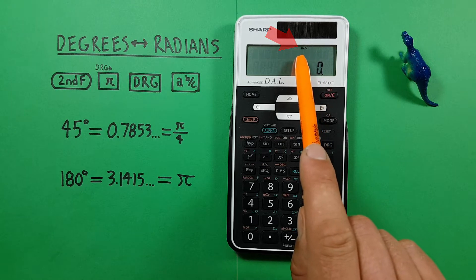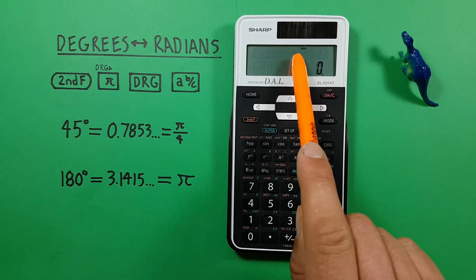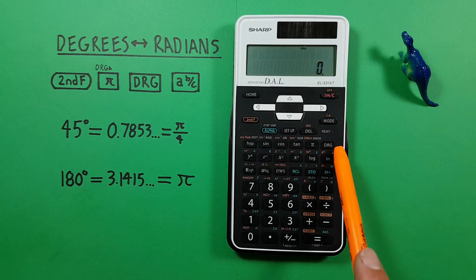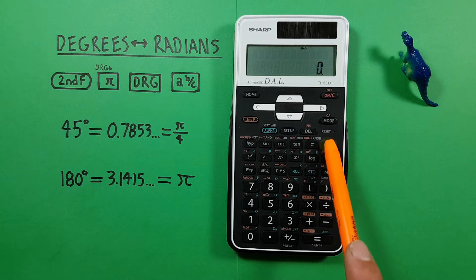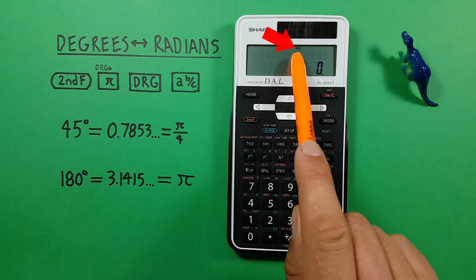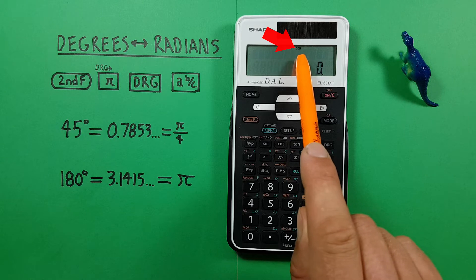If you don't see it, like on mine where it says RAD or radians, what you can do is press this DRG key until you see DEG at the top. There we go. It says DEG, so we're in degrees mode.